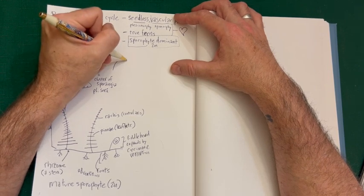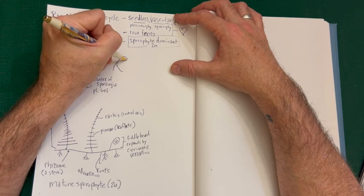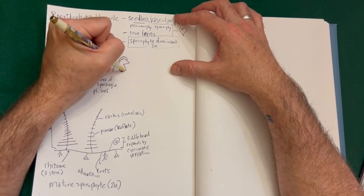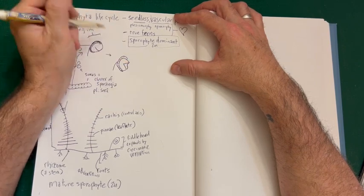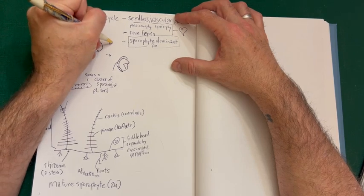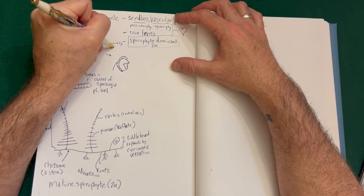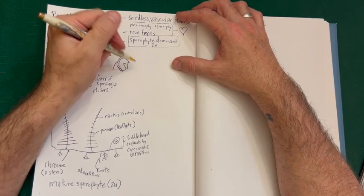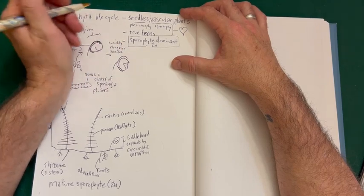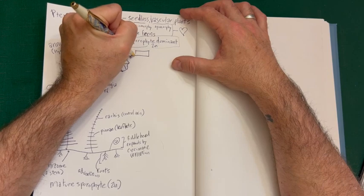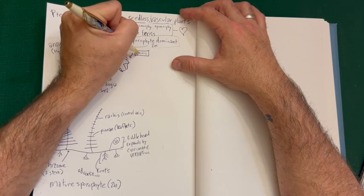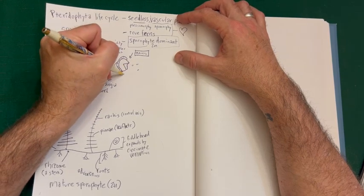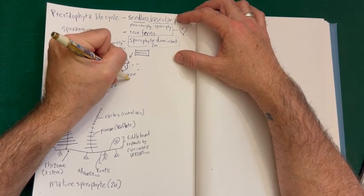When it's humid, the annulus elongates and straightens out, making the sporangium open wide. Inside the sporangium, spores are produced by meiosis. The sporangium then releases the spores.